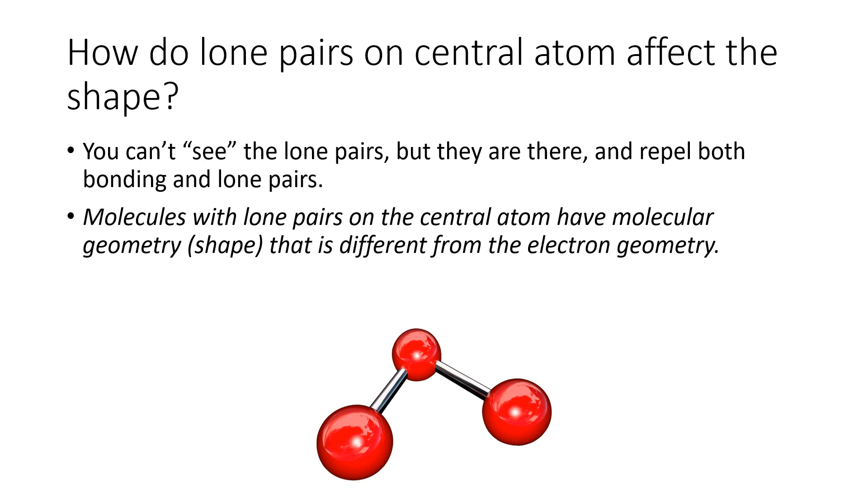How do these lone pairs on the central atom affect the shape? We can't really see the lone pairs, but they are there and they're repelling the bonding and lone pairs, so they are holding their spot in these VSEPR structures. The phrase electron geometry refers to either linear, trigonal planar, or tetrahedral depending on whether you have two, three, or four domains. And then if even one of those domains is a lone pair, then the molecular geometry will be different—it will be bent or trigonal pyramidal.